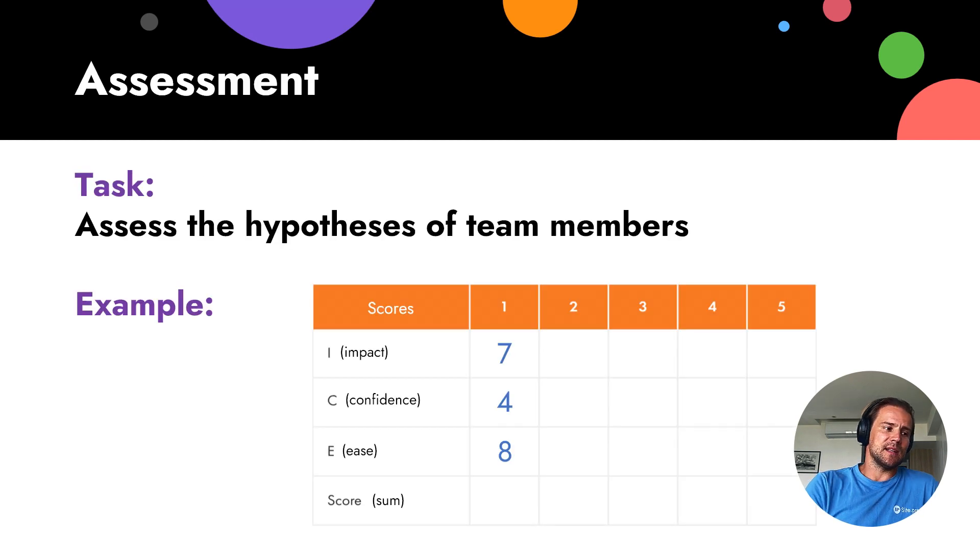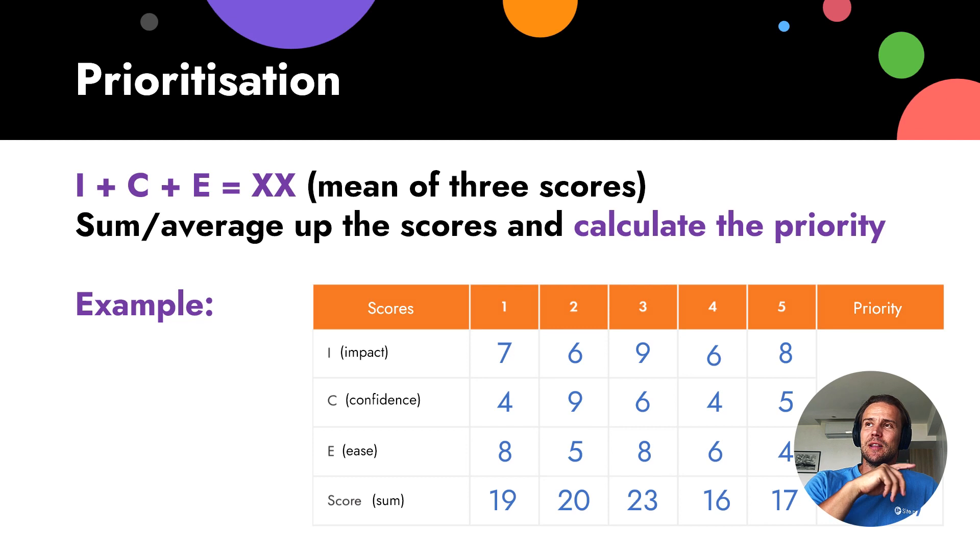So, what next? Let's say we calculate how big is the impact, how big is the confidence, and how easy to implement. What next? By the way, there are different methods what we can do next. What is important is that all these three should be involved. But you can do differently. You can sum them, for example, as you see sum, 7, 4, and 8. You can sum them and become 19. Sum, I think, it's a little bit easier for beginners, just it's much easier to sum. We don't need to use a calculator.